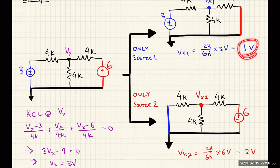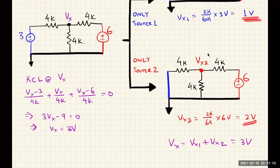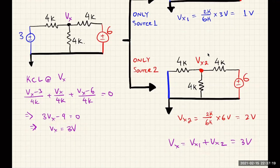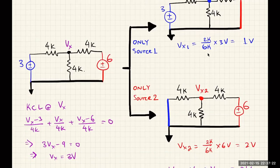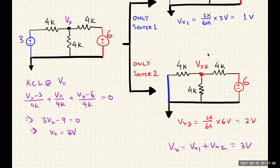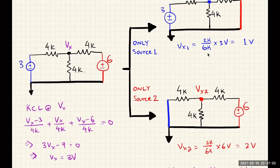Now that we have the output at this node due to each source, to get the overall output due to both sources being active, we just sum the two outputs — one volt and two volts — to get the same three volts we got using KCL analysis. This is a simple example and the benefits of superposition may not be as apparent, but for a larger circuit with four or five different sources, this is a very handy circuit analysis tool.